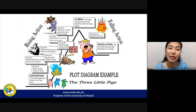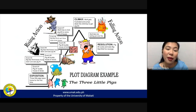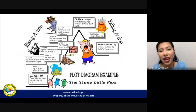For example, using the Three Little Pigs: the exposition is when the three little pigs leave home for the first time. The rising action involves the wolf trying to blow their houses down. The climax is when the wolf can't blow down the brick house but still thinks of a way to get to the pigs. The resolution is that the pigs win against the big bad wolf.